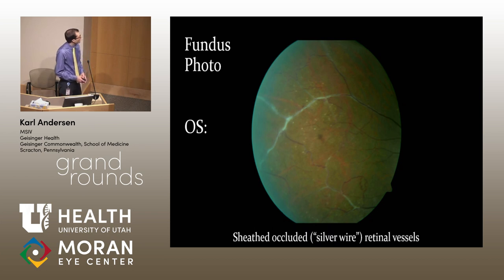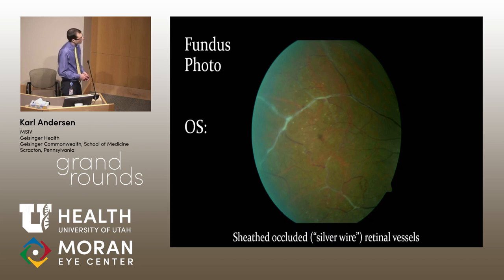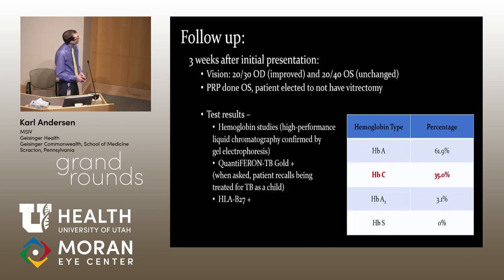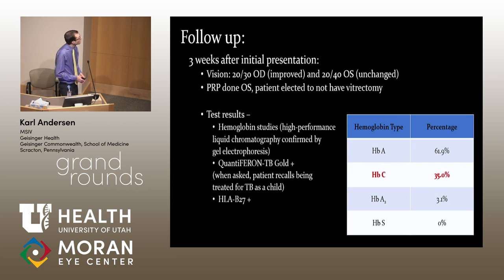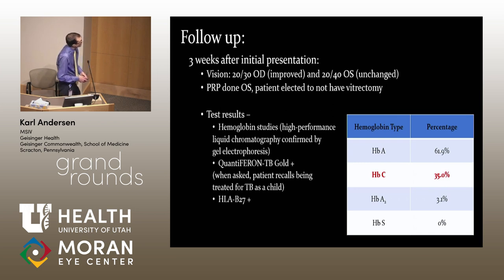In the left eye, his fundus photos showed sheathed, occluded — so-called silver wire — retinal vessels, which were observed on initial presentation. He was further worked up. His vision was improving. PRP was done to help prevent a bleed in the left eye. And he decided not to have vitrectomy, most likely because his vision was improving well and quickly without surgery.